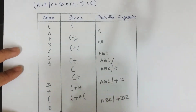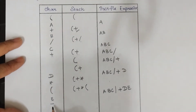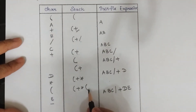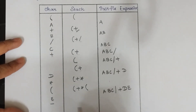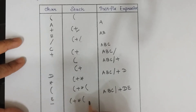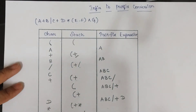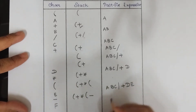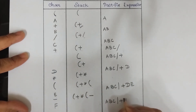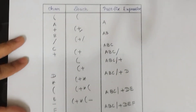The next character is the minus operator — we need to insert minus into the stack. Checking the top of the stack, it is open parenthesis, so directly insert minus into the stack. After minus, 'F' is an operand — add it to the postfix expression after E.